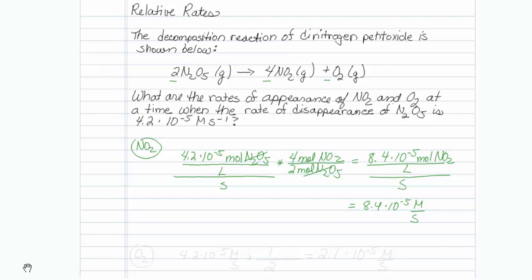So I did that one for you the long way. Now let me do it the short way. For O2, I'm just going to take 4.2 times 10 to the minus 5, and that's molar per second.